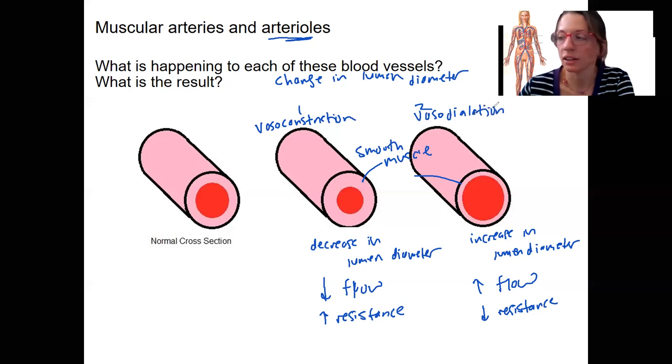And these can be regulated by various things but largely the autonomic nervous system, and so we'll talk about that when we talk about regulation of blood pressure. All right.